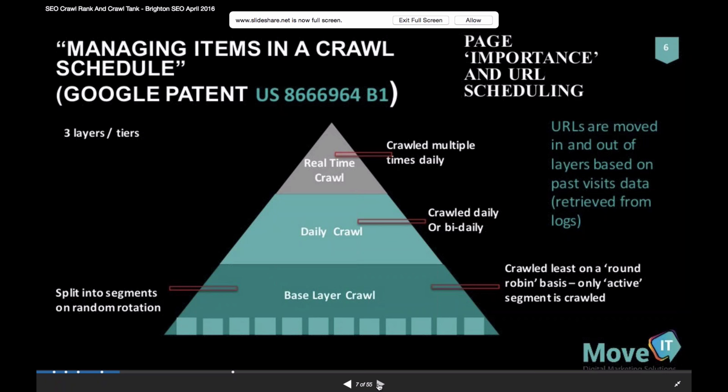Then you have the massive base layer crawl, which is the vast majority of URLs. Because there are literally millions and millions of URLs in that category, it's not efficient to go from one end to the other and start again. The patent describes how the base layer crawl is split into segments with an active segment selected on an almost round-robin basis — kind of random — eventually getting round everything. URLs in this layer are the ordinary, average, far less important ones.